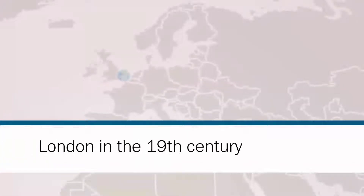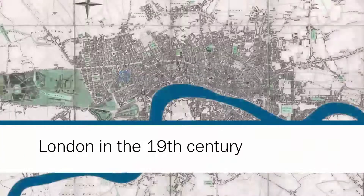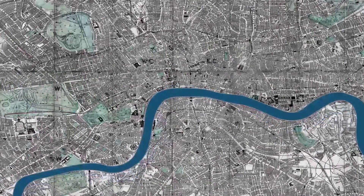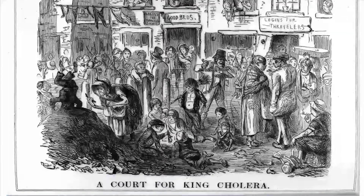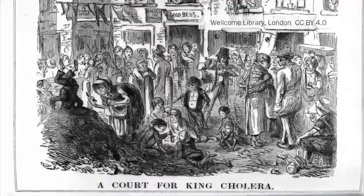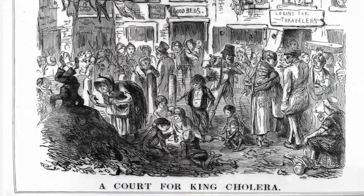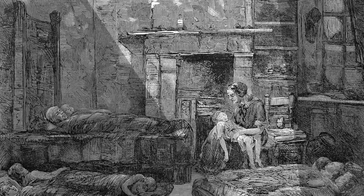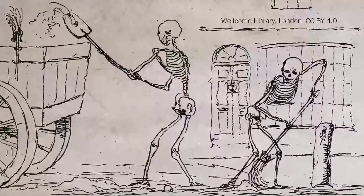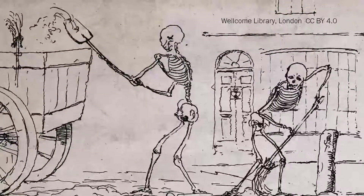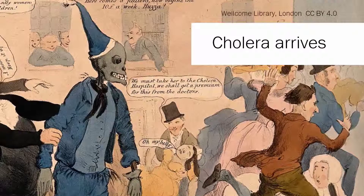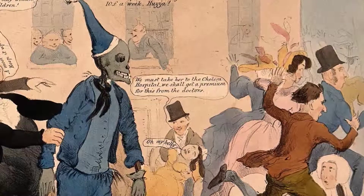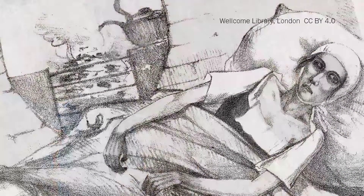During the 19th century London became the greatest city in the world and its population grew from 1 to 6 million. As well as great wealth there was severe poverty, with people living in overcrowded and unsanitary slum conditions — many poor families lived in a single room. Drinking water was taken directly from the River Thames and, for most of the 19th century, there was no sewage system. Cholera first reached Britain in 1831 and London in 1832, where the number of deaths were greatest among the slum dwellers due to poor sanitation.